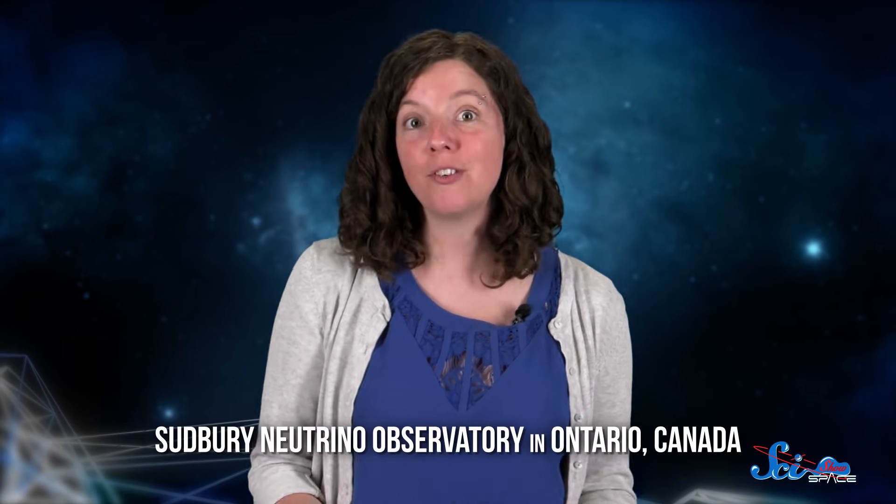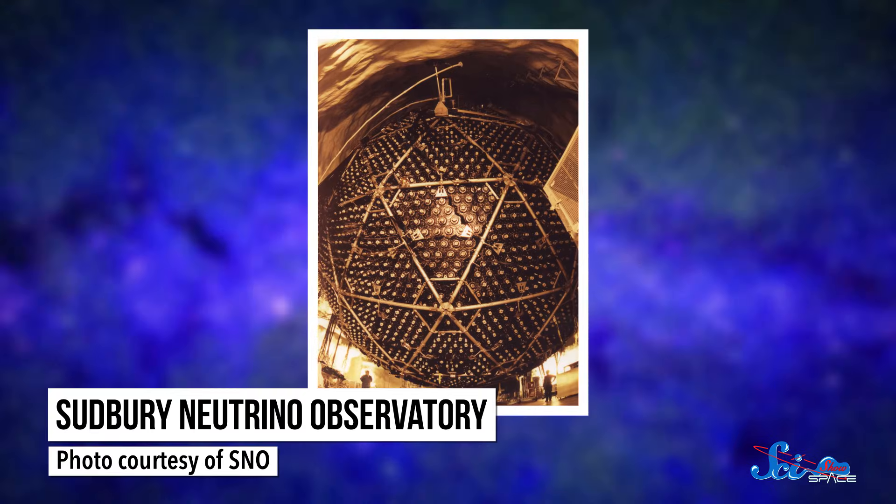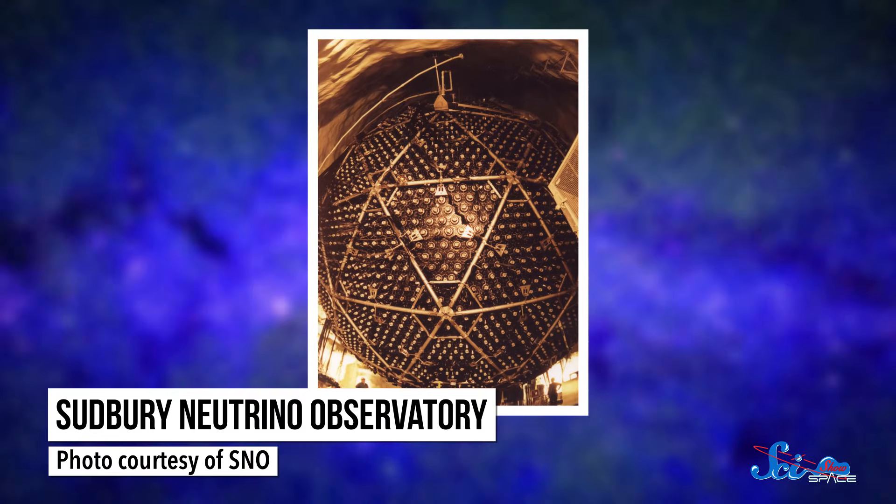For example, scientists are able to see these blue cones at the Sudbury Neutrino Observatory in Ontario, Canada. It happens when neutrinos, which are chargeless particles with a very tiny mass, undergo reactions that release really fast-moving electrons. These electrons move faster than light in the observatory's tank, filled with a different form of water, and also produce Cherenkov radiation.